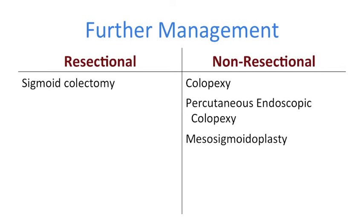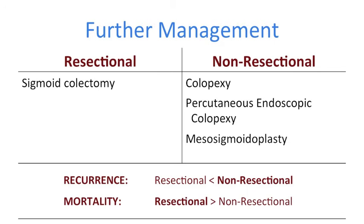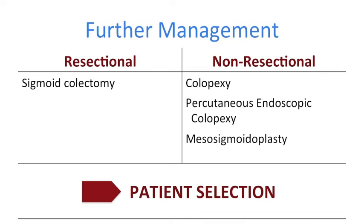Suffice to say that evidence isn't all that solid for any one of these techniques, but in general terms resectional techniques carry the lowest risk of recurrence but a higher risk of mortality when compared to these non-resectional techniques. So non-resectional techniques may be best served to very unfit patients where sigmoid colectomy is deemed excessively risky. Whilst the risk of mortality with sigmoid colectomy may indeed be around 10%, many of these patients are very frail and so it really is all about patient selection.